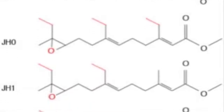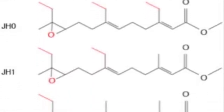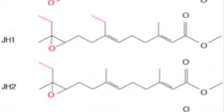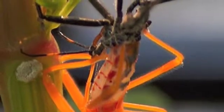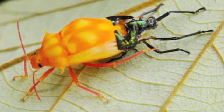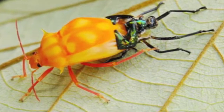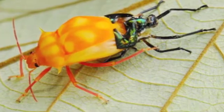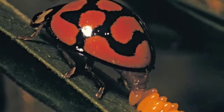Juvenile Hormone is a sesquiterpenoid group of hormones produced by the Corpora Allata that, together, regulate developmental transition in insects. Juvenile Hormone was first described by Sir Vincent Brian Wigglesworth as an inhibitory hormone that prevented the metamorphosis of blood-sucking Rhodnius prolixus, a kissing bug common to Central and South America.